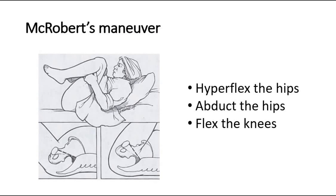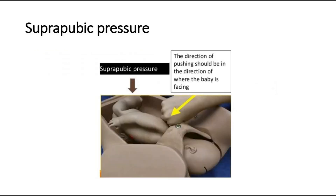The L stands for legs and is performed by McRoberts maneuver, where we ask the patient to hyperflex the hips, abduct the hips, and flex the knees in the position shown in the picture. Next, we apply suprapubic pressure, and the direction of pushing should be in the direction where the baby is facing.